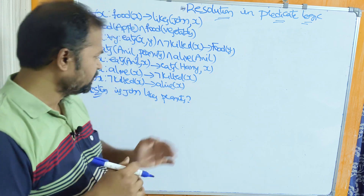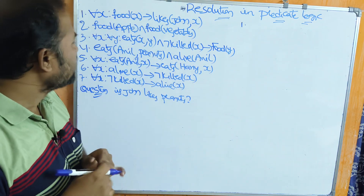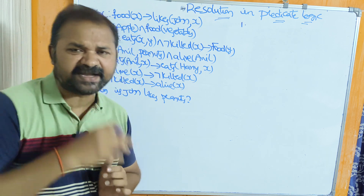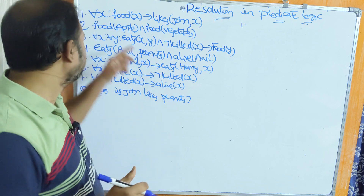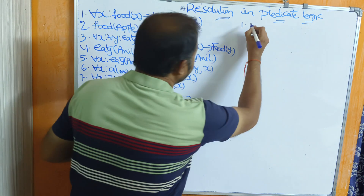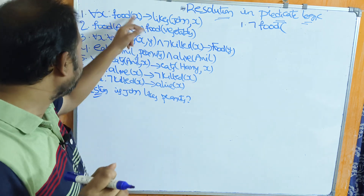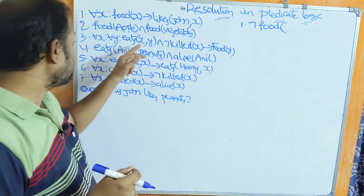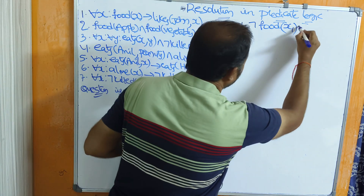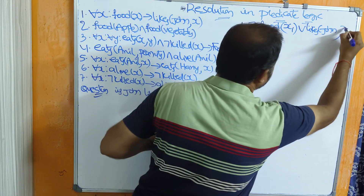CNF means conjunctive normal form. Let us convert one by one. First statement: for all x, food(x) implies likes(john, x). We have a universal quantifier, so we can directly eliminate it. This is in the form p implies q, and we know the formula: negation(p) or q. So negation food(x1) — we use x1 to keep variables unique — or likes(john, x1).